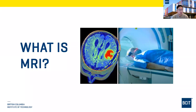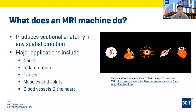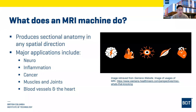Our MRI machine produces sectional anatomy in any spatial direction. Its main usages are neurology studies, imaging inflammation, cancer, bones, muscles and joints, and blood vessels and the heart. It's quite robust in terms of its major applications, but all studies from head to toe can be imaged with MRI. It's a popular modality for its versatility and its use of non-ionizing radiation, which makes it safe for both patients and technologists.